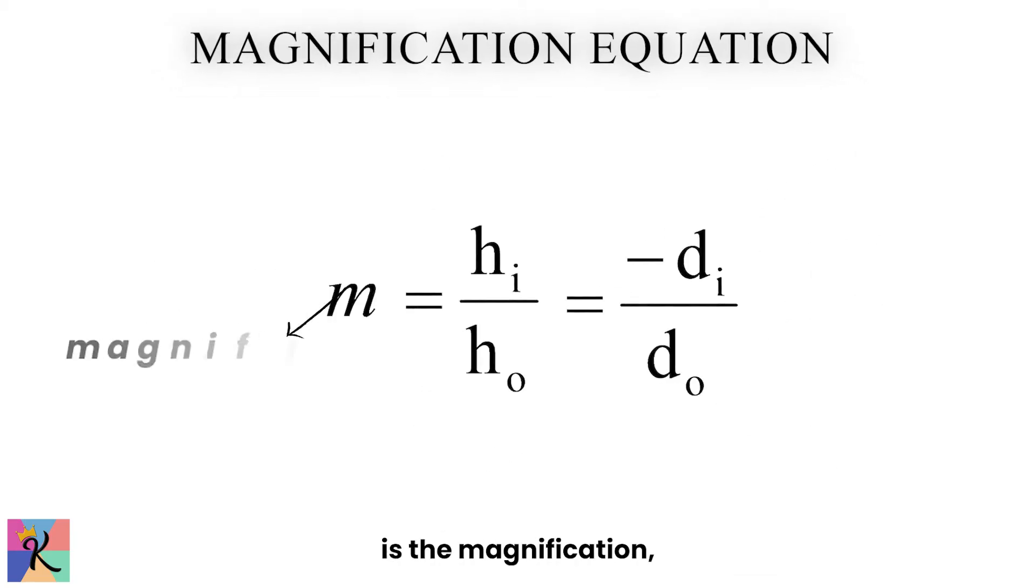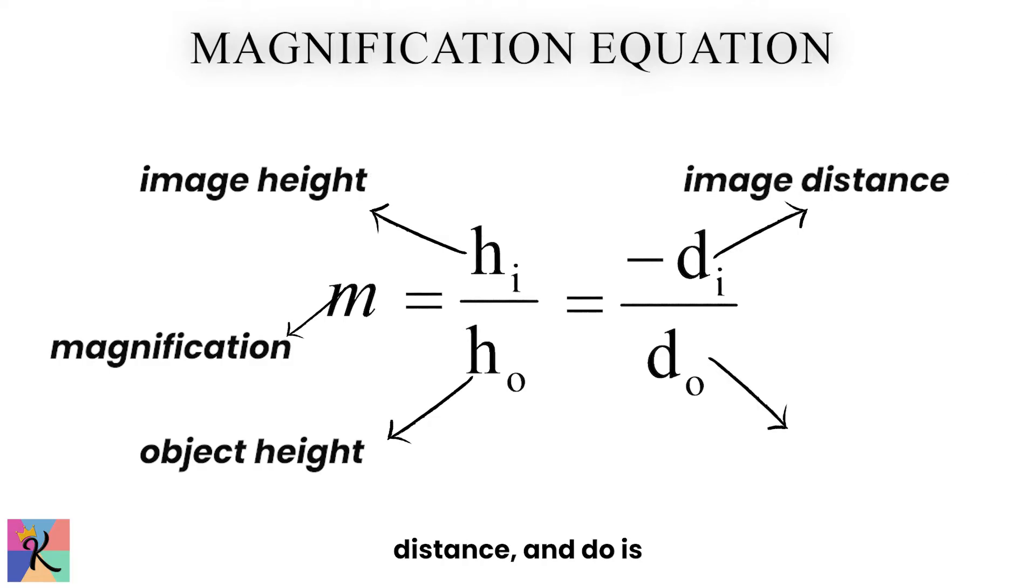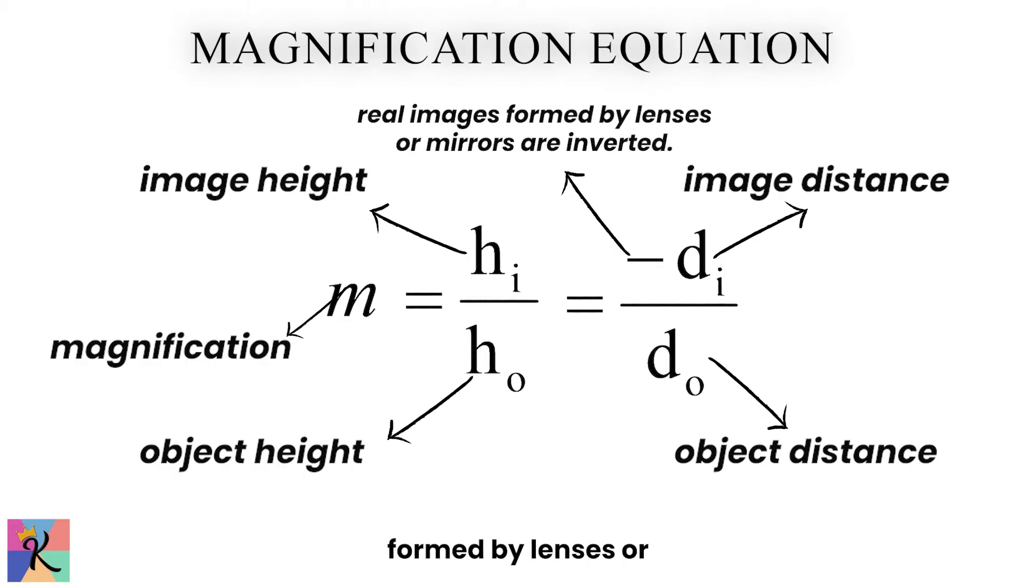Here, M is the magnification, HI is the image height, HO is the object height, DI is the image distance, and DO is the object distance. The negative sign in the equation indicates that real images formed by lenses or mirrors are inverted.